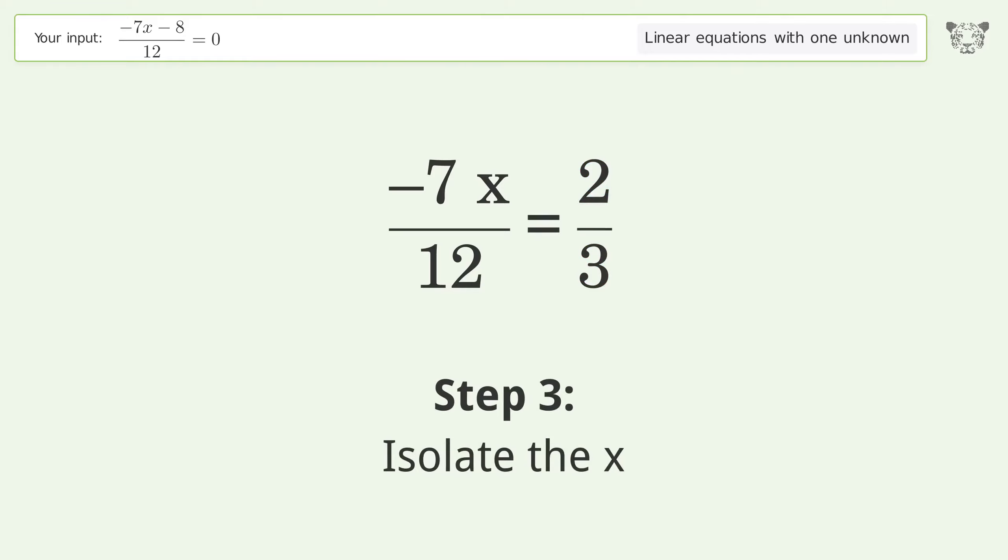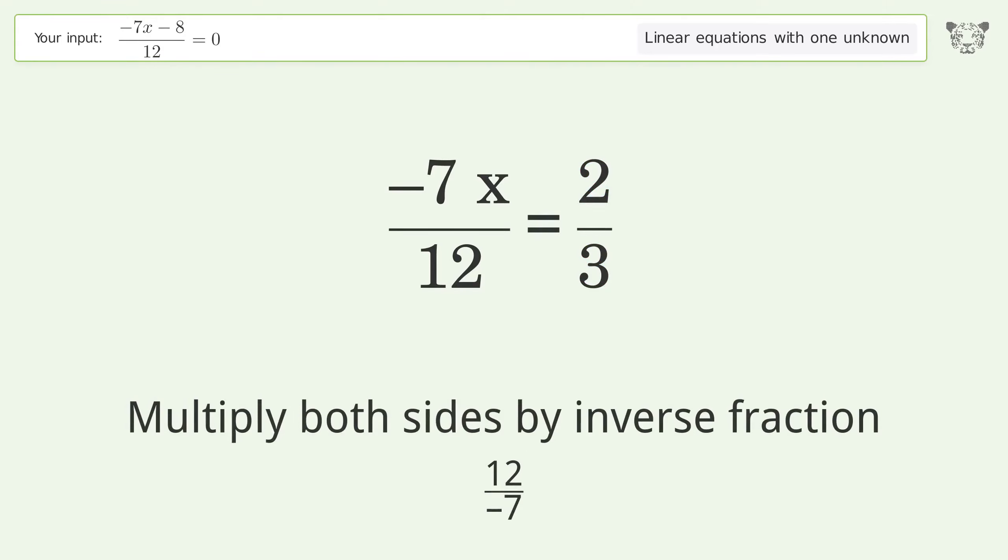Isolate the x. Multiply both sides by inverse fraction 12 over negative 7.